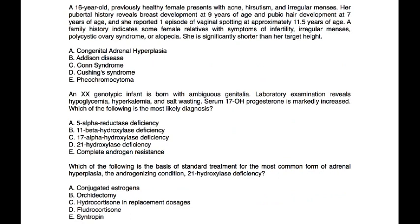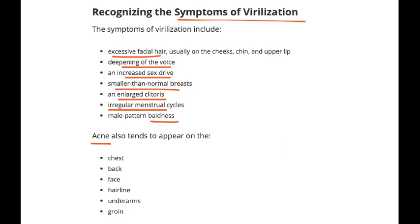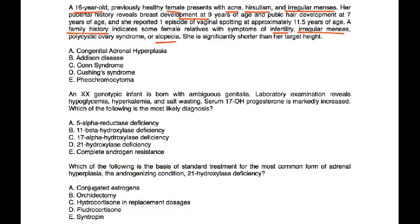Vignette 1: A 16-year-old previously healthy female presents with acne, hirsutism, and irregular menses. Pubertal history reveals breast development at age nine and pubic hair development at age seven. She reported one episode of vaginal spotting at approximately 11.5 years of age. Family history includes female relatives with infertility, irregular menses, PCOS, or alopecia. She is significantly shorter than her target height. This vignette presents many signs of virilization, pointing strongly toward CAH as the diagnosis.